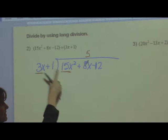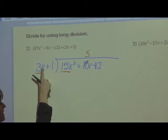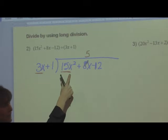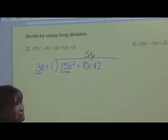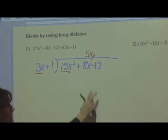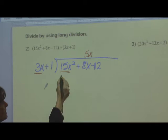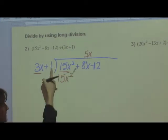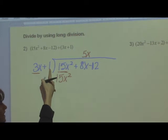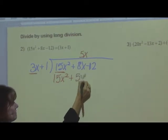5 times 3 is 15. Now, x values. x times what gives you x²? Well, x would. So I am choosing to multiply by 5x. Once again, 5x times 3x gives me 15x². Now, don't forget the other term. 5x times a positive 1 is a positive 5x.